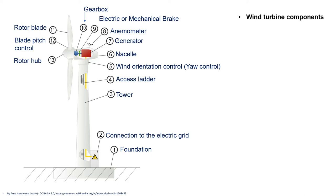Here in the picture are presented the main components of a basic wind turbine. These components are: foundation, connection to the electrical grid, tower, access ladder inside the tower, wind orientation or yaw control, nacelle, generator, anemometer, electric or mechanical brake, gearbox, rotor blade, blade pitch control, and rotor hub. We shall see the function of each and every component one by one in detail.